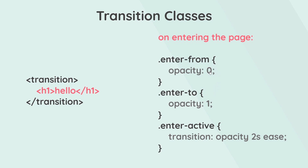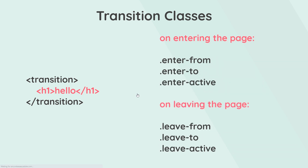An example of this is having an initial state of opacity zero — we say enter-from opacity zero, then enter-to opacity one, so we transition from invisible to visible as the element comes onto the page. Inside enter-active we have the transition property where we say we're transitioning the opacity, it will take two seconds, and we ease it in. So it will fade in over two seconds when it first enters the page.